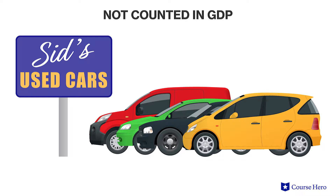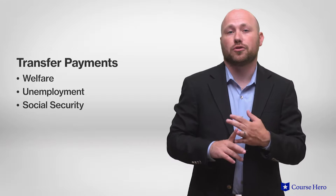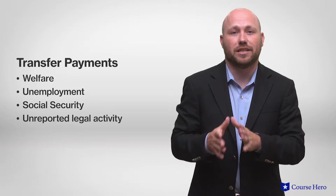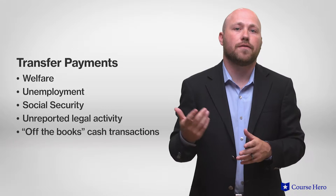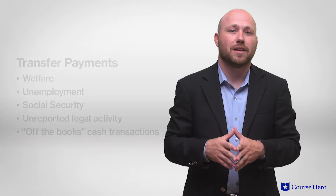Secondhand sales like used cars or items sold in thrift stores are not counted in GDP. Neither are purely financial transactions such as buying and selling stocks and bonds or exchanging one financial asset for another. Transfer payments such as welfare, unemployment, or social security payments, and unreported legal activities such as tips waiters don't report, are also excluded.